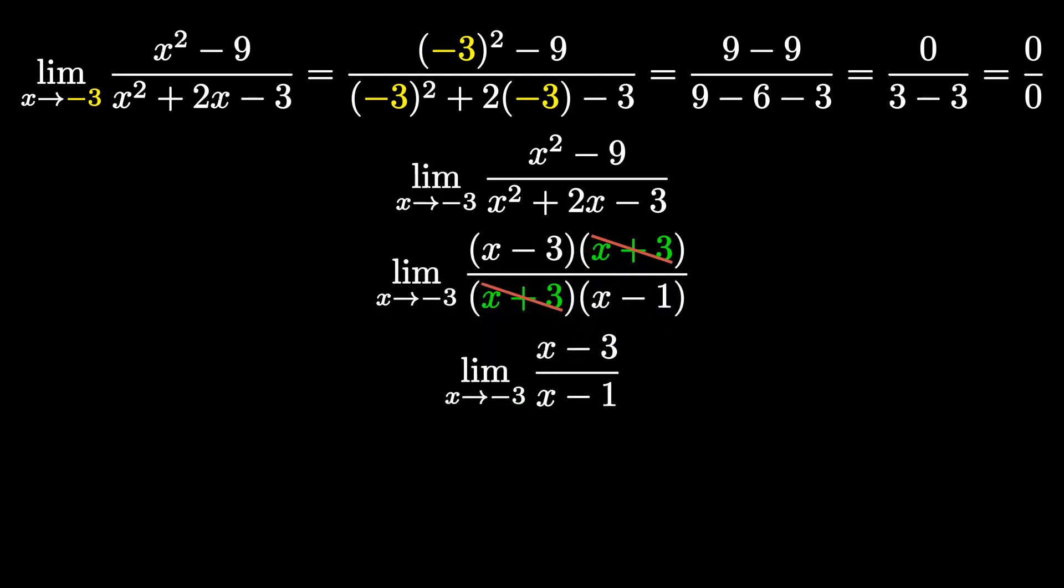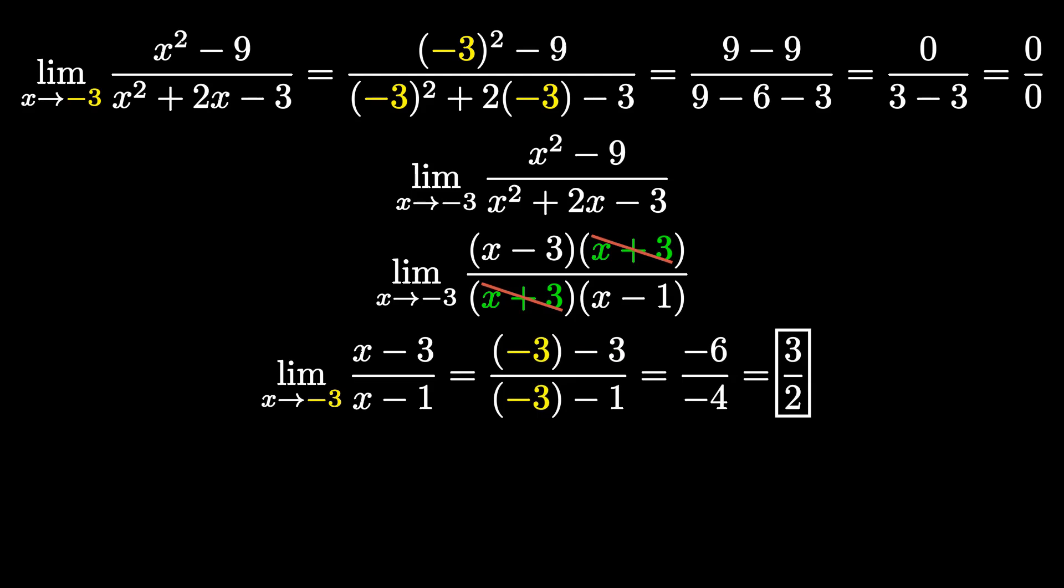I always say the key thing with indeterminate limits is you want to cancel out those holes. Once you cancel out those holes, you can reevaluate the limit because those holes are essentially why our limit was in indeterminate form. It's the reason why we're getting 0 over 0. But now that we've gotten rid of the problem, we can now reevaluate our limit and unveil what the true value is. So we're going to reevaluate our limit and plug in negative 3 into our new function. And that will give us negative 3 minus 3 all over negative 3 minus 1. Negative 3 minus 3 is negative 6, and then negative 3 minus 1 is negative 4. And then negative 6 all over negative 4 will reduce to 3 halves. Therefore, 3 halves is the answer to our limit problem.